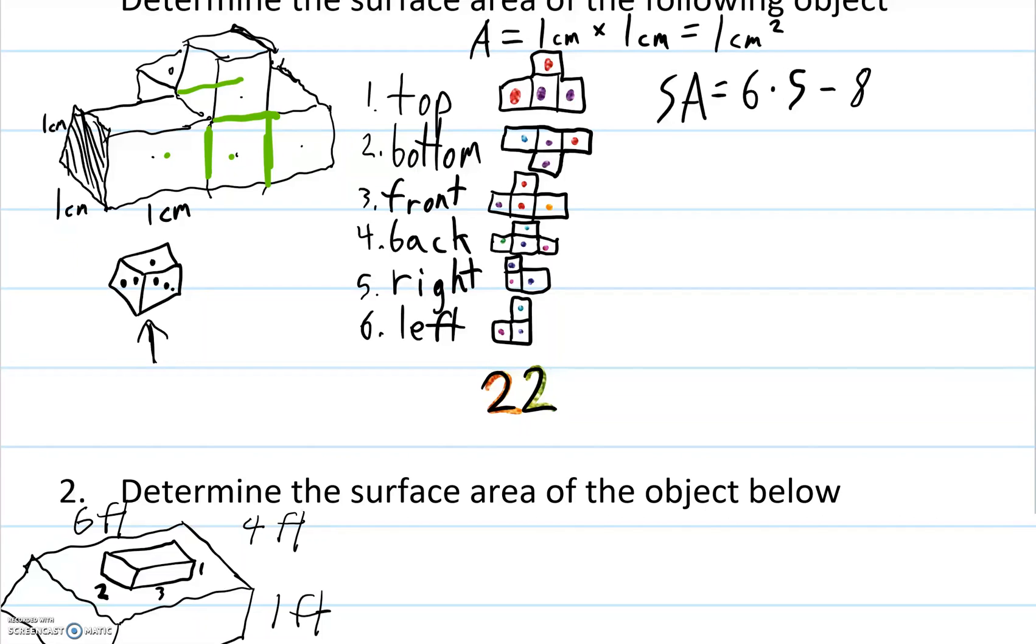So 6 times 5 minus 8, let's go another step here, 6 times 5 is 30, minus 8, 30 minus 8 is 22. Surface area is equal to 22, and we should remember and write down that that's centimeters squared, which is good to see that it's the same as when we count it up.